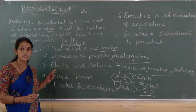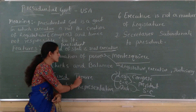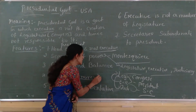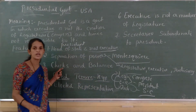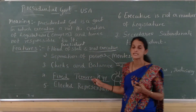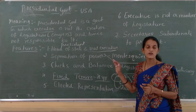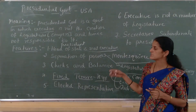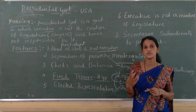The next feature is fixed tenure. In the presidential form of government, the president and his government are elected for a fixed term of four years. According to the constitution of the United States of America, presidential candidates can contest for only two consecutive terms.